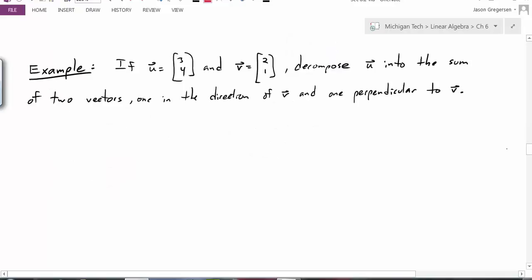I'm given some vectors in my example. I have the vector u and the vector v. And my problem is that I want to decompose u into the sum of two other vectors, one that's in the direction of v and one that's perpendicular to v. I want to decompose it such that the sum of these two vectors gives me u. So let's look at this problem. First, let me sketch out what's going on here.